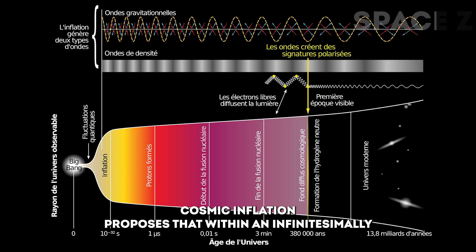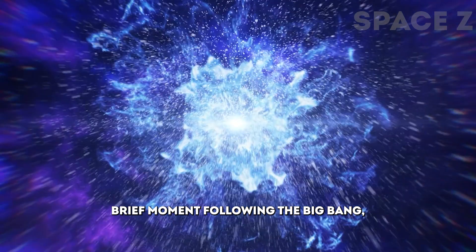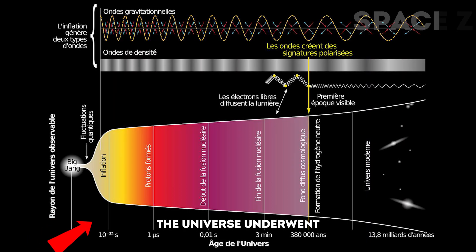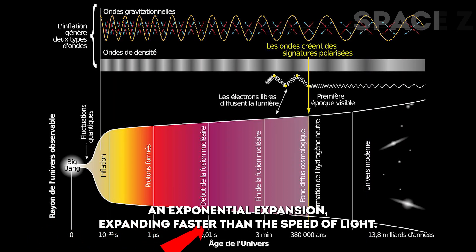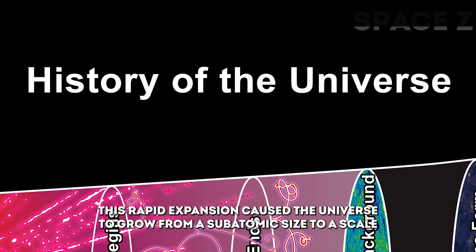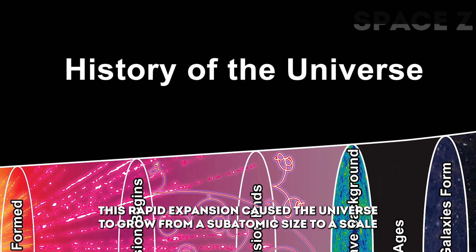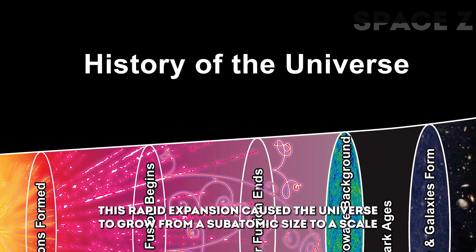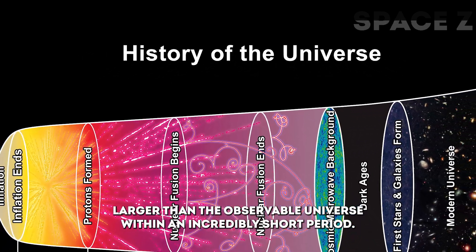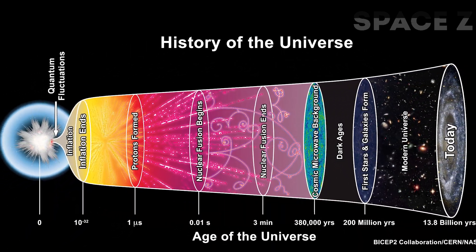Cosmic inflation proposes that within an infinitesimally brief moment following the Big Bang, the universe underwent an exponential expansion, expanding faster than the speed of light. This rapid expansion caused the universe to grow from a subatomic size to a scale larger than the observable universe within an incredibly short period.